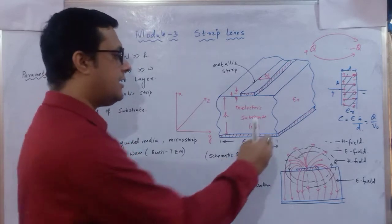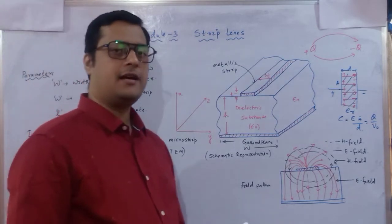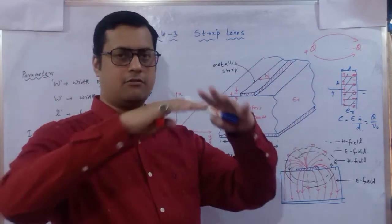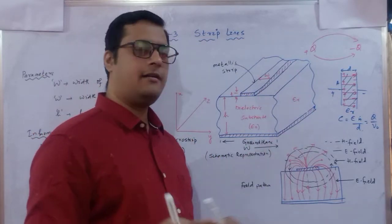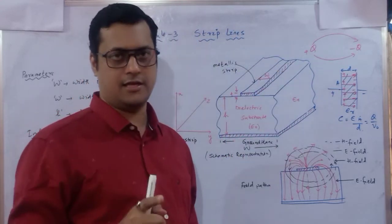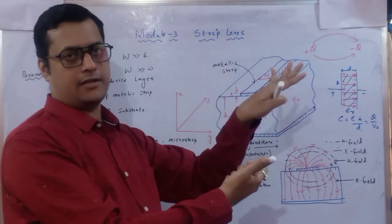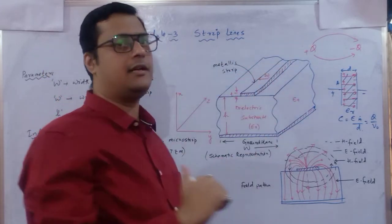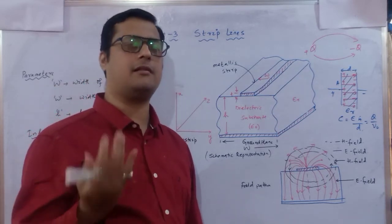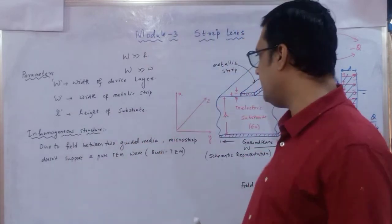The electric field generates from the metallic plate and terminates at the ground plane. Due to current flow in the upper metallic plate, a magnetic field generates circularly. If current moves in one direction, the magnetic field is anticlockwise; if current moves the other way, the field is clockwise — depending on the assumed current direction.